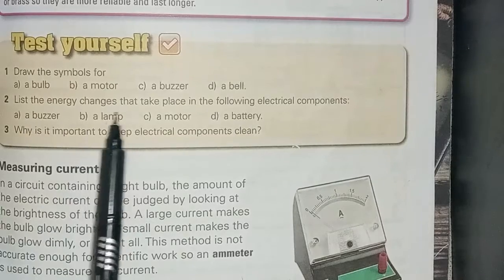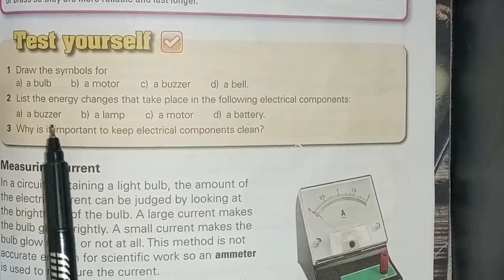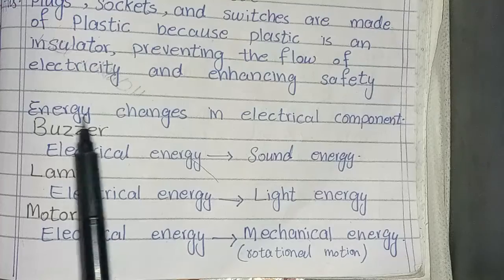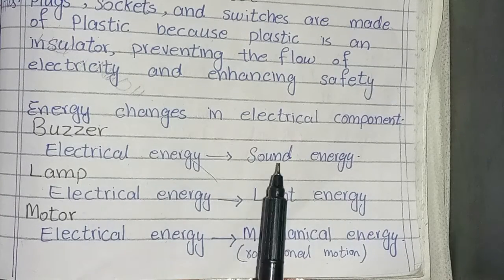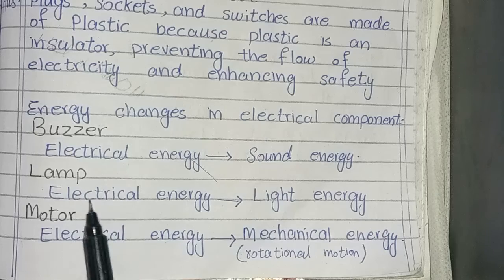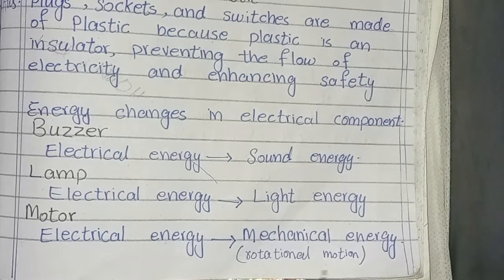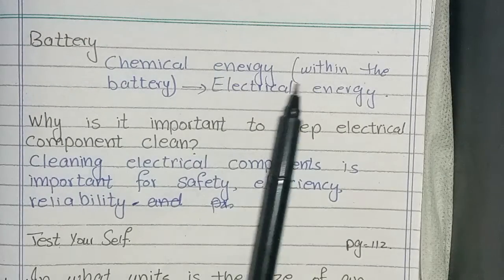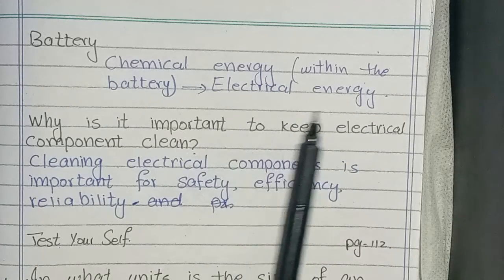List the energy changes that take place in the following electrical components. Buzzer: electrical energy to sound energy. Lamp: electrical energy to light energy. Motor: electrical energy to mechanical energy, involving rotational motion. Battery: chemical energy stored within the battery converts to electrical energy.